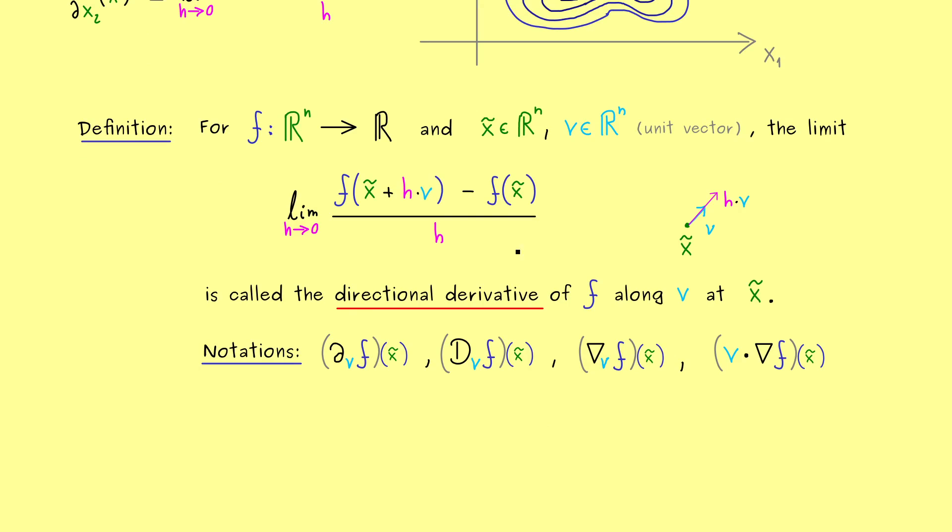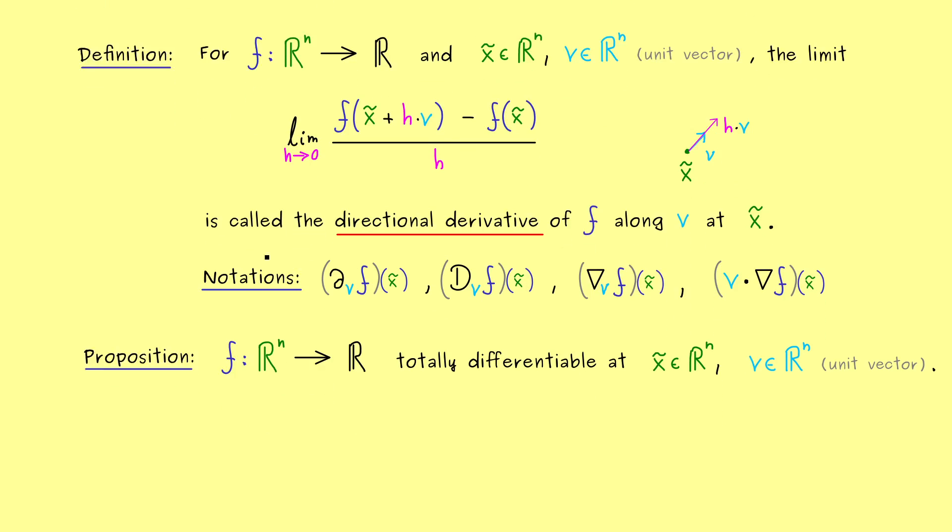Now calculating this limit here could be complicated depending how your vector v looks like. Therefore, it's good to know that the whole thing gets easier when we have a totally differentiable function f. This is now something we can formulate with a proposition. Let's take a function f defined on R^n which is totally differentiable at the point x̃, and in addition we take a direction again, so a unit vector v. Then of course we expect that this limit from above exists.